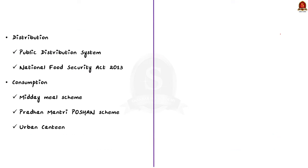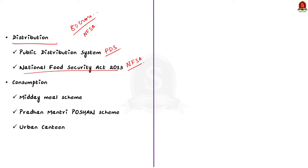Coming to the distribution part — you can mention India's PDS system and the National Food Security Act of 2013. Currently, around 80 crore persons are covered under NFSA for receiving highly subsidized food grains, helping ensure food security. For the consumption part, you can mention the Midday Meal Scheme, Pradhan Mantri Poshan Scheme, and Government Urban Canteens in providing quality cooked food. These schemes and initiatives help ensure food security, completing the significance section.